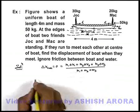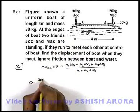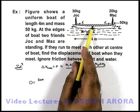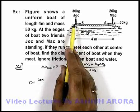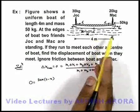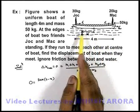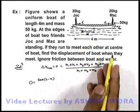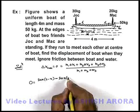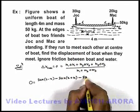Substituting the values, the net displacement of the centre of mass is zero. The mass of Jock is 30 kg, multiplied by his displacement. Jock travels 2 meters with respect to the boat and the boat moves left by x, so the net displacement of Jock is (2 − x). Mac moves toward the left by 2 meters on the boat plus x from the boat's motion, so the net displacement of Mac is −(2 + x), with mass 20 kg. The boat has also been displaced by x, so we write −50 multiplied by x, which gives the term −15x after simplification.